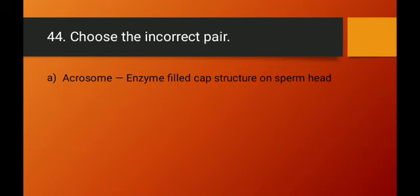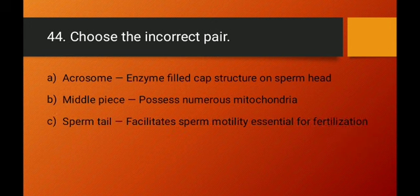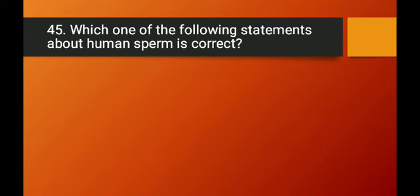Question number forty-four: choose the incorrect pair. Option A — acrosome: enzyme-filled cap structure of sperm head — is correct. Option B — middle piece possesses numerous mitochondria — is correct. Option C — sperm tail facilitates motility essential for fertilization — is also correct. Option D — semen contains only sperms — is wrong, because semen consists of seminal fluid plus sperms, and the seminal fluid contains fructose, calcium, and certain enzymes. Option D is the incorrect pair and the right answer.